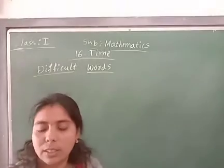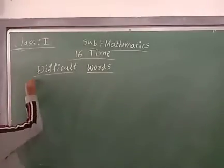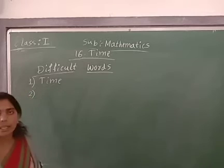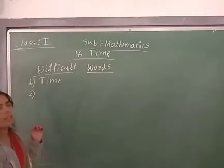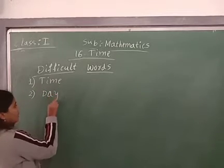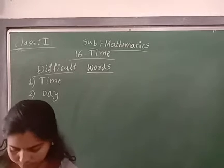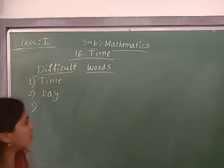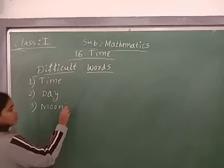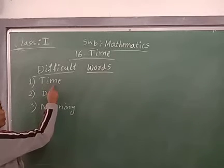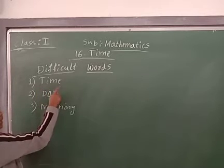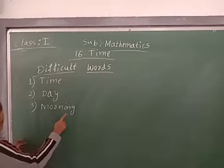Write these difficult words for chapter 2. First one: T-I-M-E, time. Second one: D-A-Y, day. Say: T-I-M-E, time. D-A-Y, day.